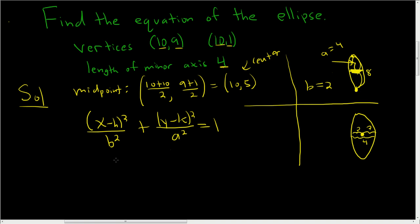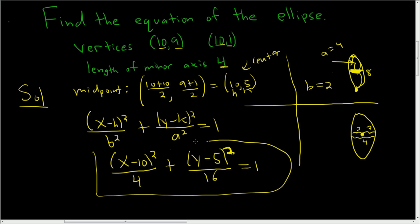Okay, so b is 2, and h is 10, and k is 5, and a is 4. So this will be x minus 10, quantity squared, b is 2, so you get 4, b squared is 4, plus y minus 5, quantity squared, and a is 4, so a squared is 16, and this is equal to 1. And that is the equation of the ellipse.